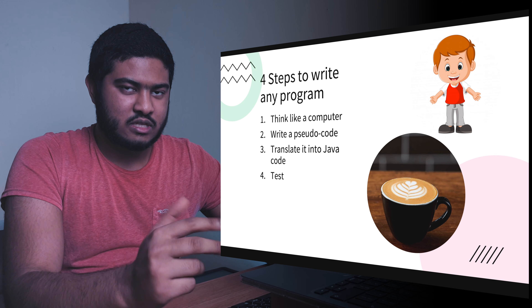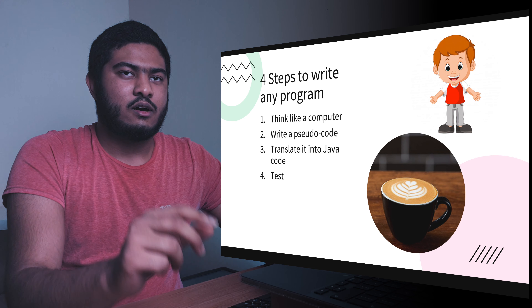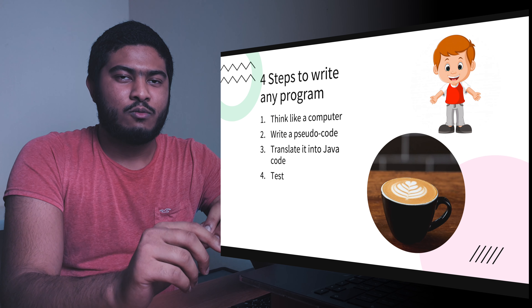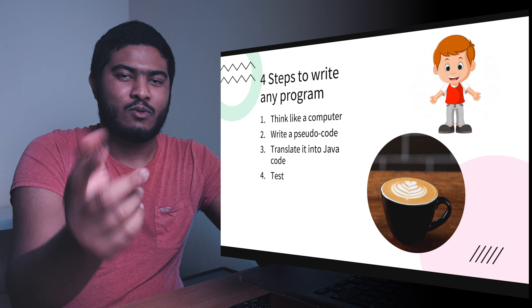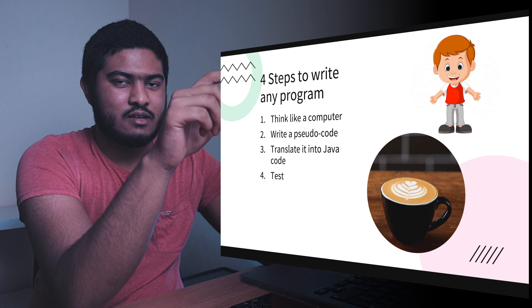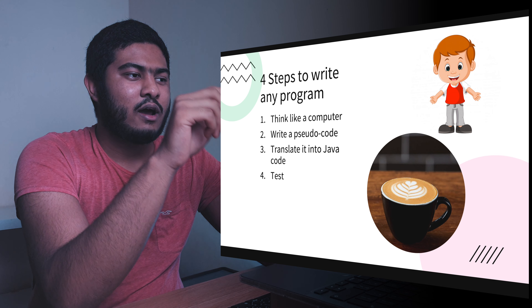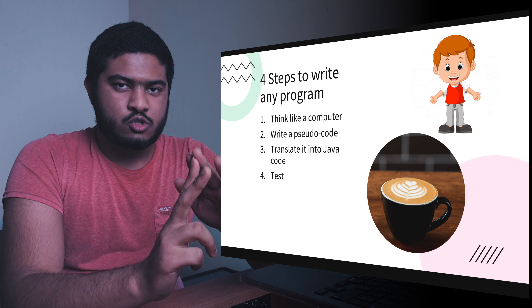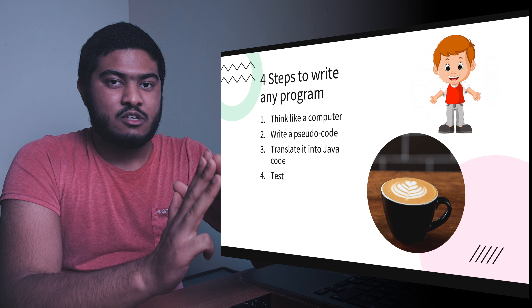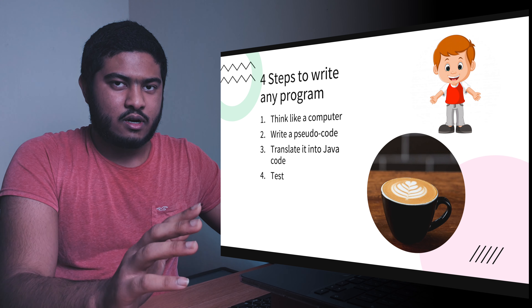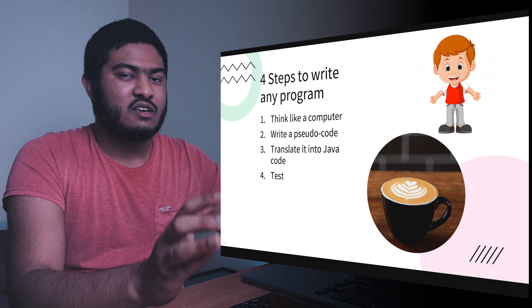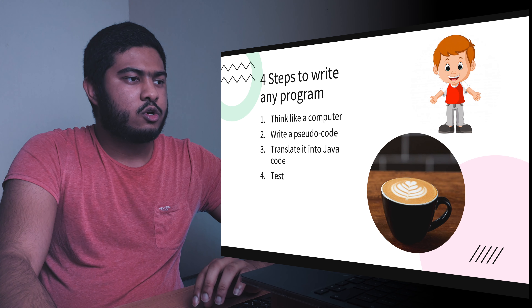Once you've written your pseudocode, try to convert that phrase into actual Java code. For example, if you wrote in pseudocode 'add one to x', in Java code that would be x + 1. You first write in plain English and then underneath write the Java code. The fourth and final step is to test with a whole range of inputs, because testing is very important.